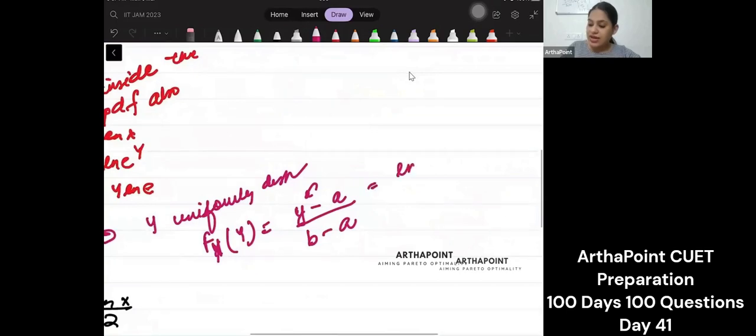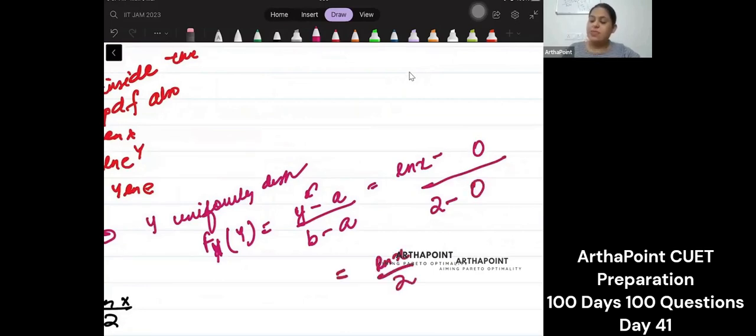So I will get ln x. It is uniformly distributed between 0 to 2 upon 2 upon 2 minus 0. So this will simply be ln x by 2.